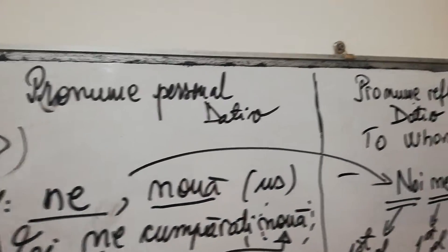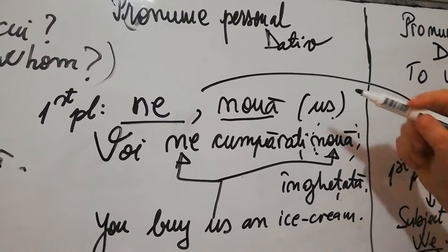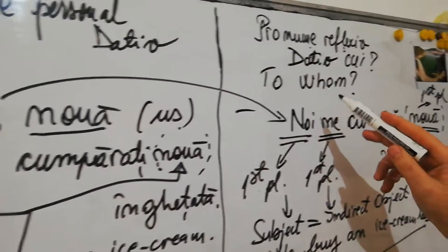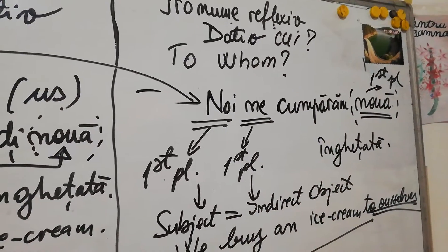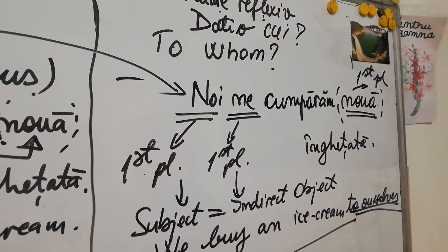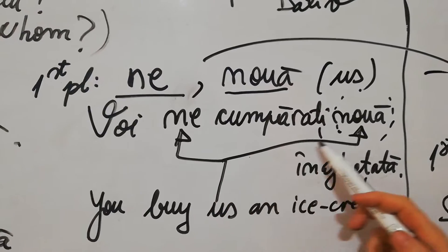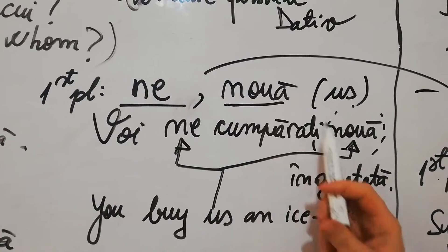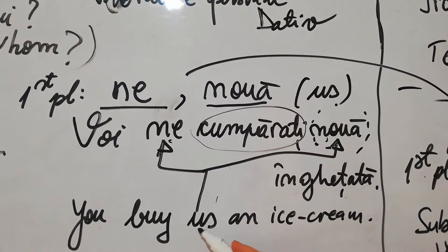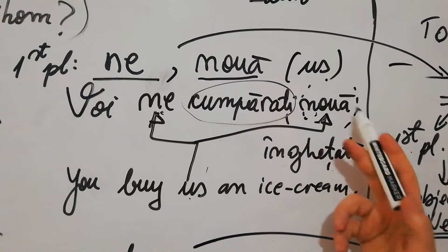Now we go to the personal pronoun and reflexive pronoun in plural. First person plural for 'noi' - we - is in English 'us'. In Romanian: 'ne' with no focus, 'nouă' with focus. This form is borrowed by the reflexive pronoun because the reflexive pronoun has no proper form here. The reflexive pronoun has its own forms only for the third person, singular and plural. 'Voi ne cumpărați nouă o înghețată' - you buy us an ice cream. The pronoun embraces the verb from the front and behind.